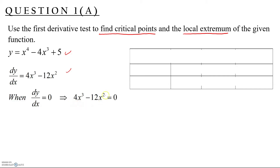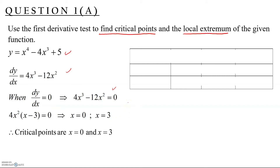We need to factorize this expression to find the value of x. Factorizing, we get 4x squared times (x minus 3) equal to zero. So the roots are x equals zero and x equals 3. These are our critical points.